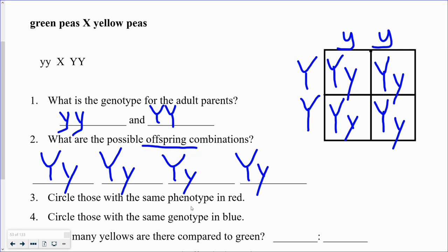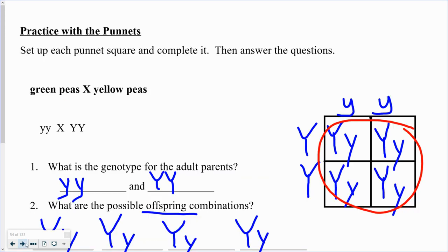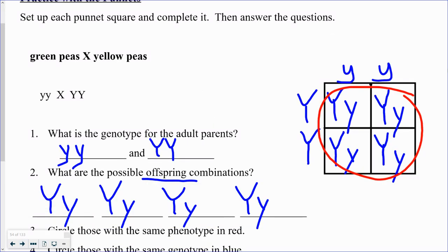Remember, phenotype means outside appearance. So what color are these going to be — green or yellow peas? Since each has the dominant Y, they're all going to be yellow. Every combination — capital Y lowercase y — comes out yellow. So all four offspring are the same color on the outside.